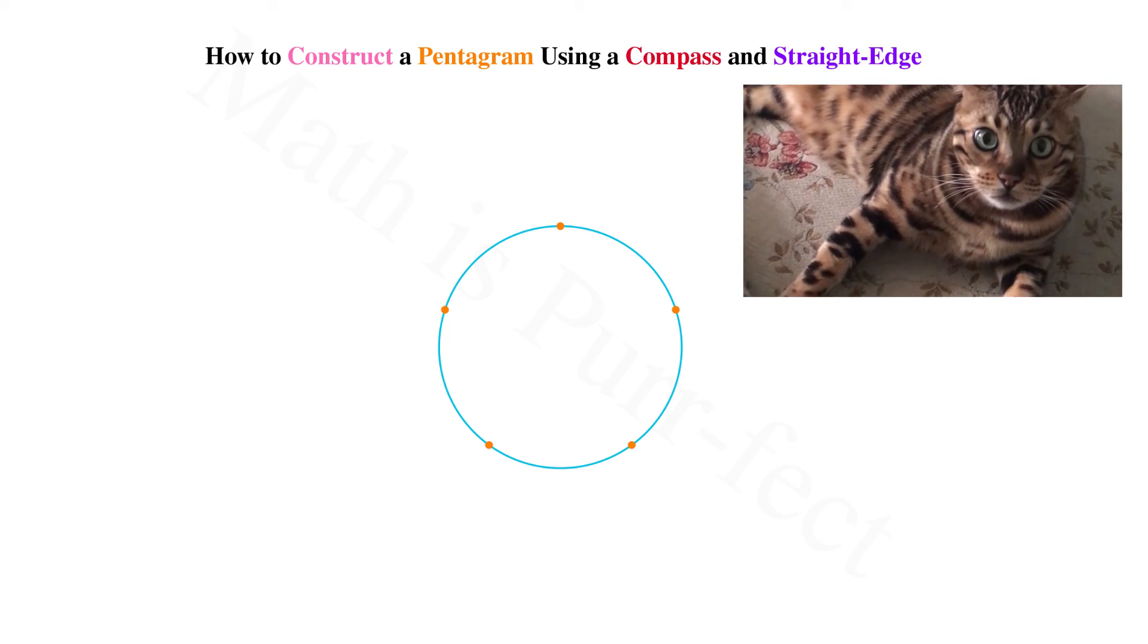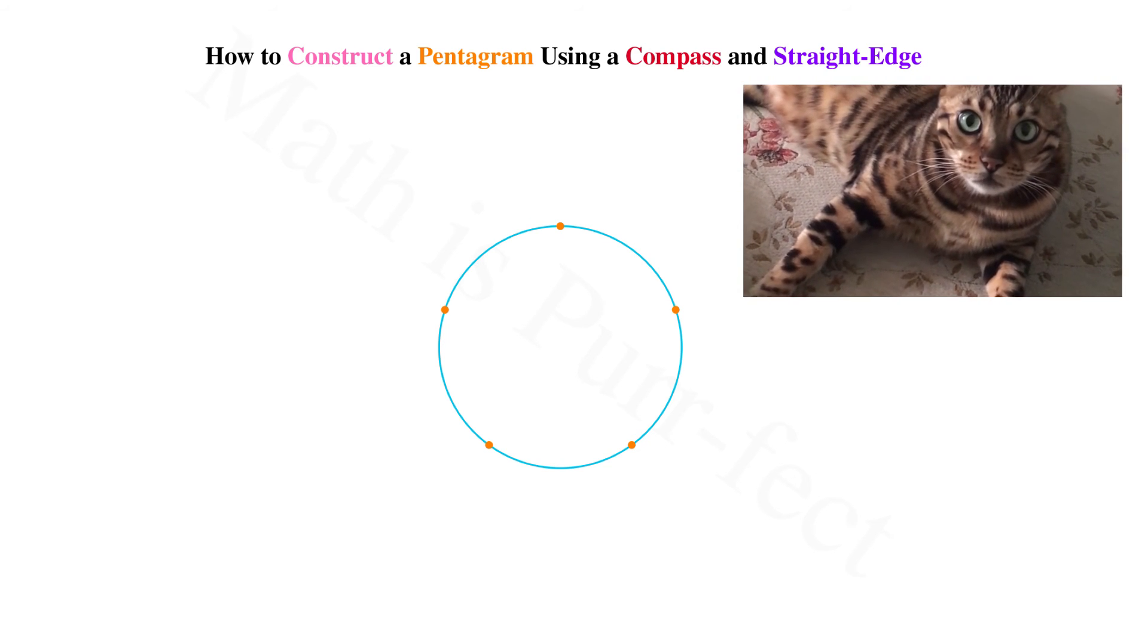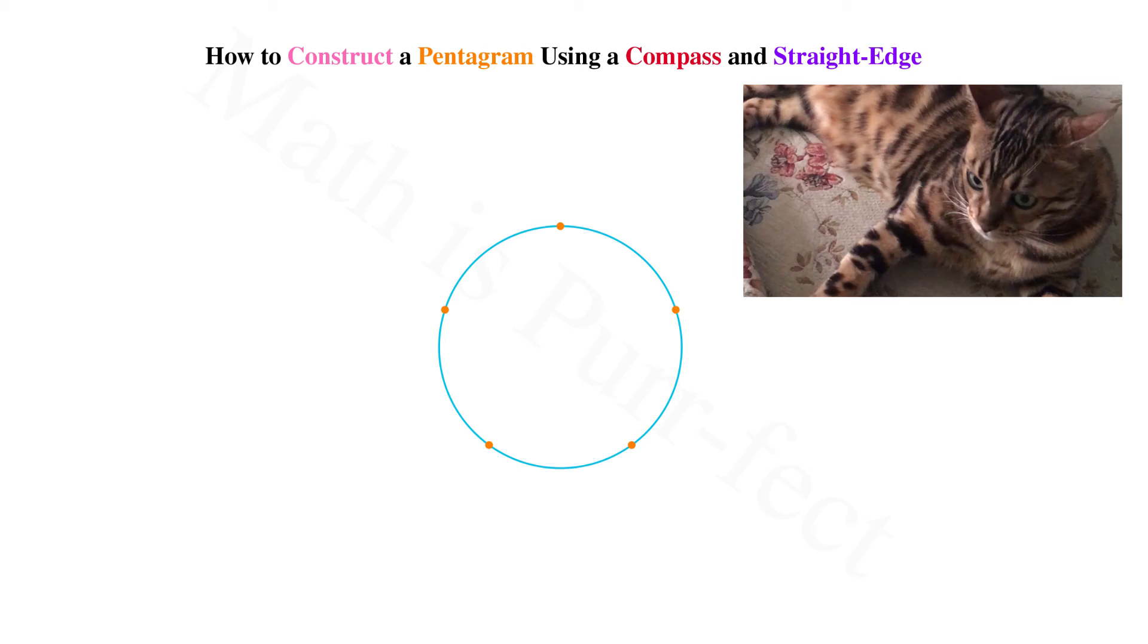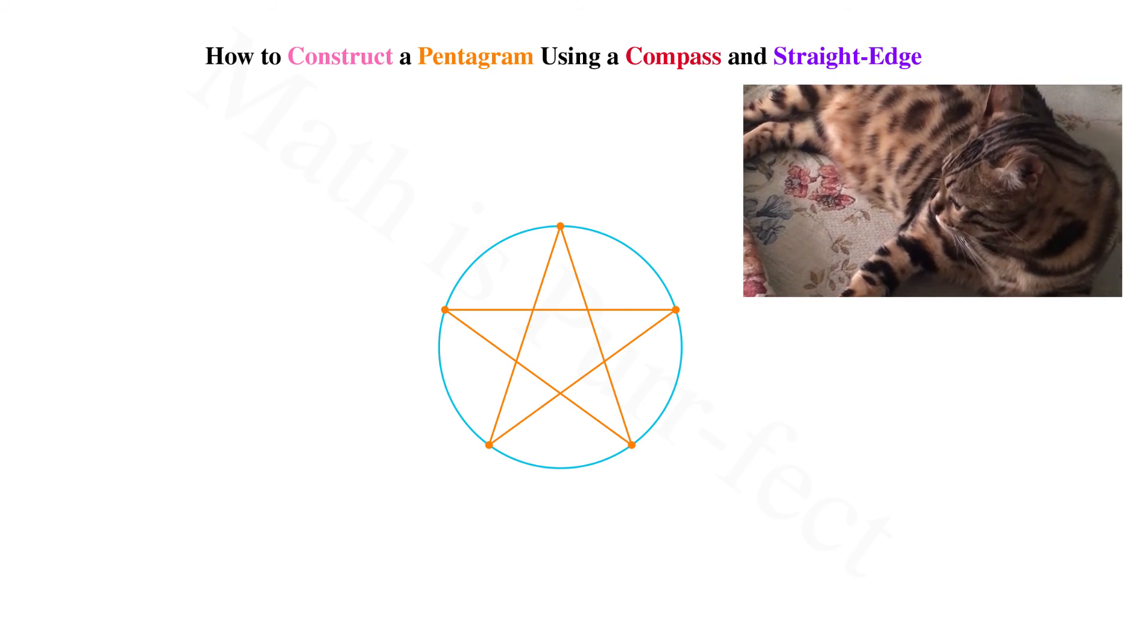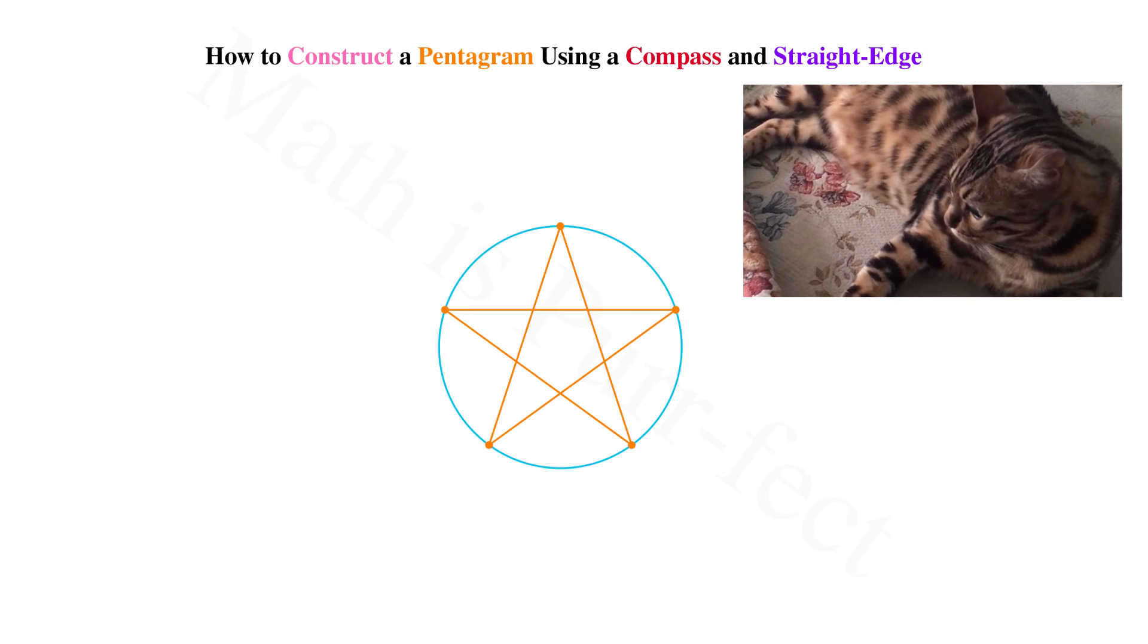Erasing all of our construction marks, save for the original circle, we can see clearly how the pentagram is formed by connecting every other dot until arriving back at the original. Et voila, a perfect pentagram.